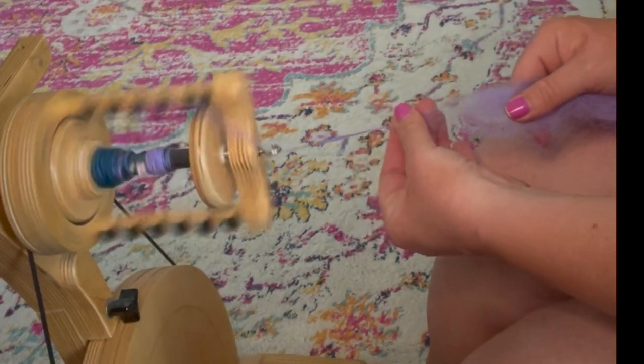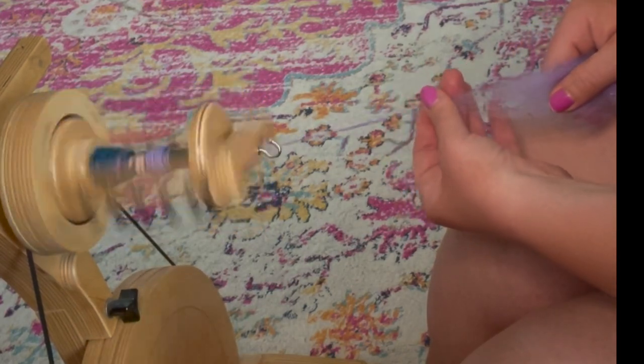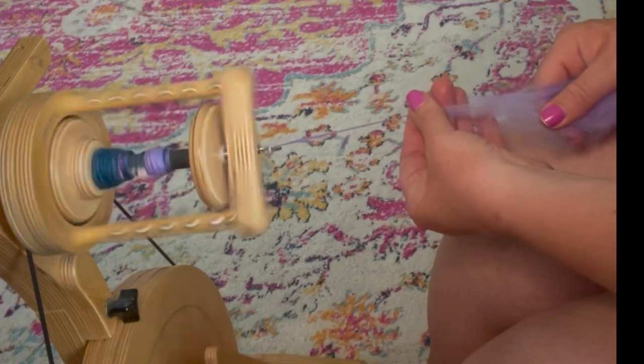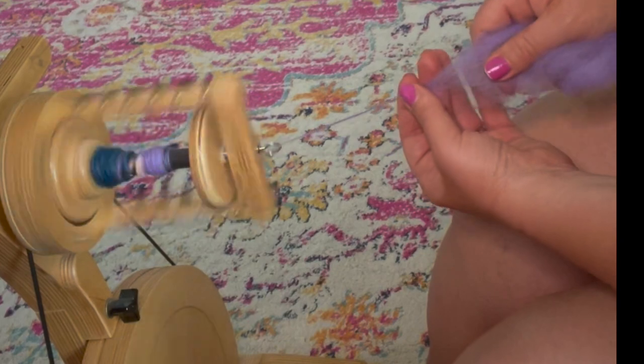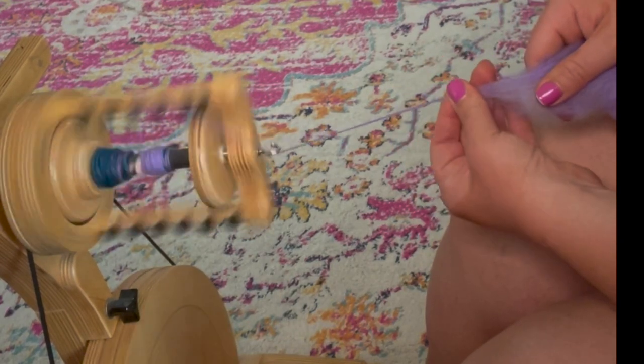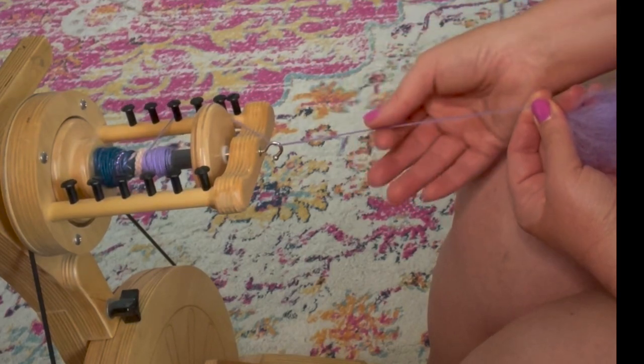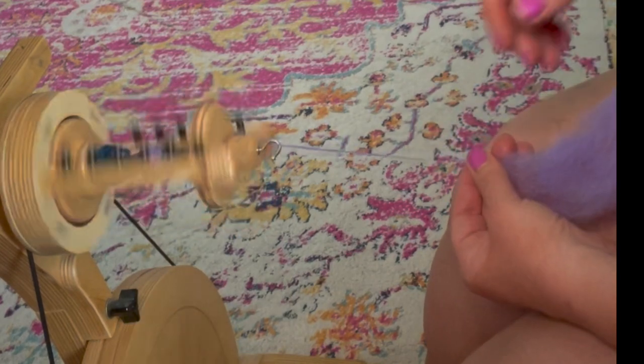You're getting the air out of the middle of it, and this is great if you want a very nice, smooth, well-behaved yarn that you're then going to maybe chain ply or two ply. That way you've got these really nice, well-behaved singles that aren't all fluffy and loofy. Let me show you that from a different angle so you can see.